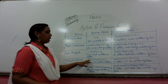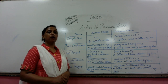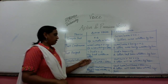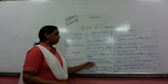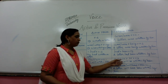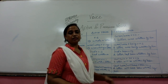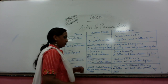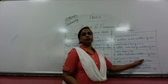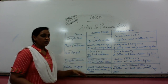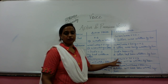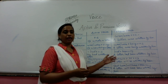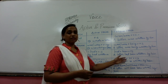Simple future tense uses 'shall' or 'will' before the base verb. 'Shall' is used with first person and 'will' with second and third person. For example: 'He will write a letter.' In passive voice, after 'will' add 'be' plus past participle: 'A letter will be written by him.' 'Be' is also used with other modals like can, could, would, and should — the same structure is followed.